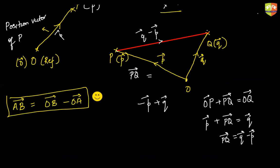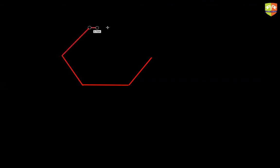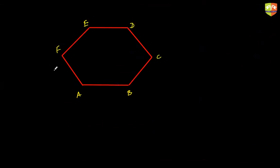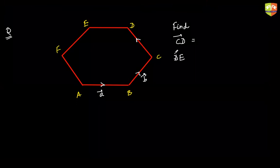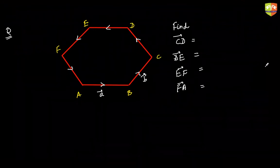Now let's apply this with a problem. In a regular hexagon, AB vector is A and BC vector is B. Find the vectors CD, DE, EF, and FA in terms of A and B.